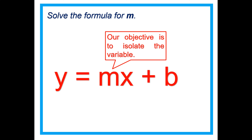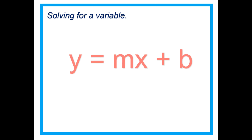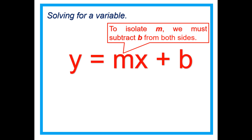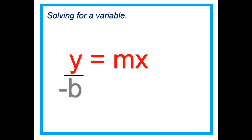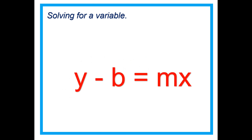Always remember: your goal is to isolate the variable. We are solving for M. To isolate M, we must first subtract B from both sides — minus B on both sides. That cancels B, leaving Y minus B equals MX.